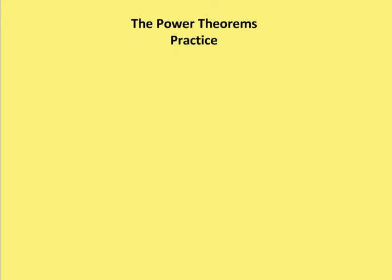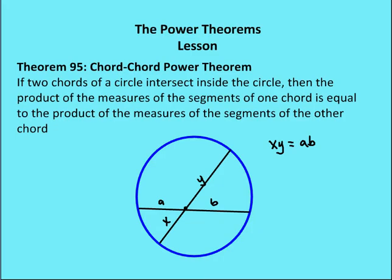Let's go back and refresh our memory on the theorems before we start the problems. We have the chord-chord power theorem: two chords of a circle intersect inside the circle, and the product of the measures of the segments of one chord, x times y, is equal to the product of the measures of the segments of the other chord, a times b.